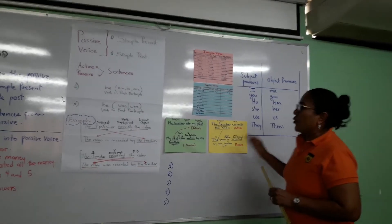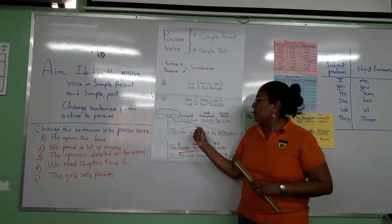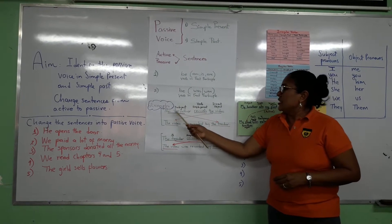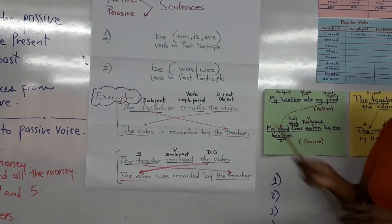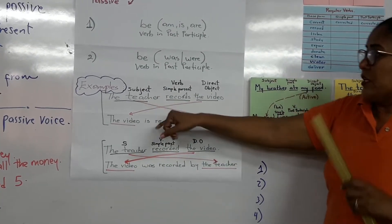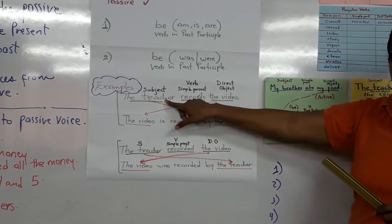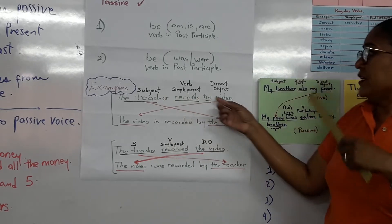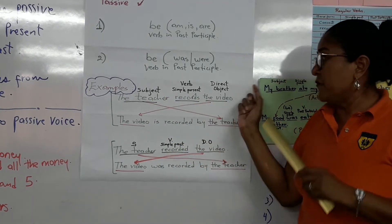I am going to explain this topic through this example. We have the first sentence: 'The teacher records the video.' This sentence is active because the subject — in this case, the teacher — makes the action. Who is recording the video is the teacher, so this is an active sentence.